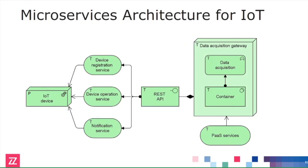Going even deeper, we can look at these internal devices and how they connect to the insurance company's own architecture, getting into the micro-services architecture behind it. The data acquisition gateway has, for each device it connects to, a data acquisition function running inside a container. There's a REST API offering different services where devices can register themselves and feed in data. This runs on a platform-as-a-service solution — not modeled in detail here, but it's the typical kind of architecture you see nowadays.